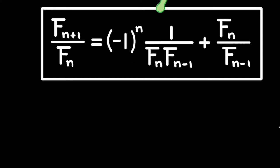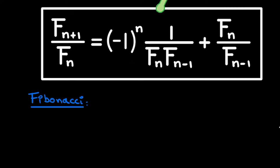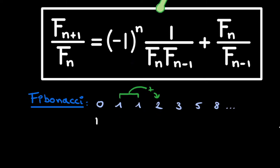The first question that comes to mind is: what exactly are these fn's? These fn's are numbers in the Fibonacci sequence, which looks as follows: 0, 1, 1, 2, 3, 5, 8, and so on, whereby each term is obtained by adding the previous two terms together. For example, 1 plus 1 equals 2. These fn's are simply the numbers in this sequence: f0 is 0, f1 is 1, f2 is 1, f3 is 2, f4 is 3, and so on, where the index indicates the place in the sequence.